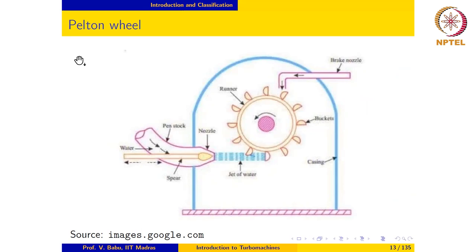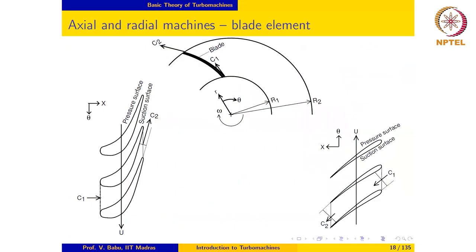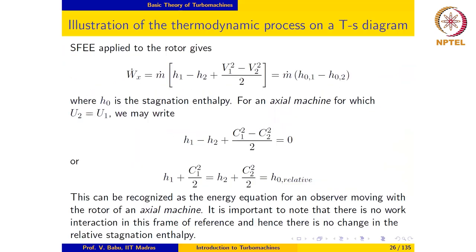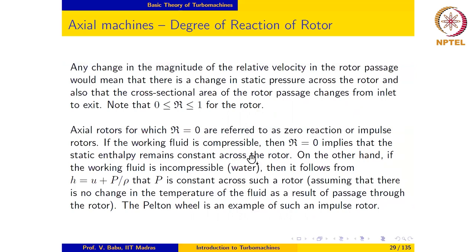In the Pelton wheel, water from a reservoir at a higher elevation is accelerated to high velocity in a nozzle, and when it exits the nozzle, the water comes out at atmospheric pressure. The air inside the casing is also at atmospheric pressure, so the entire turbine operates at constant pressure — hence it is an impulse machine. It must be understood clearly that a zero-reaction machine and an impulse machine are not the same: zero reaction implies constant enthalpy, while impulse generally signifies constant pressure across the rotor. It is customary to use these terms interchangeably, though the context must be kept clear.